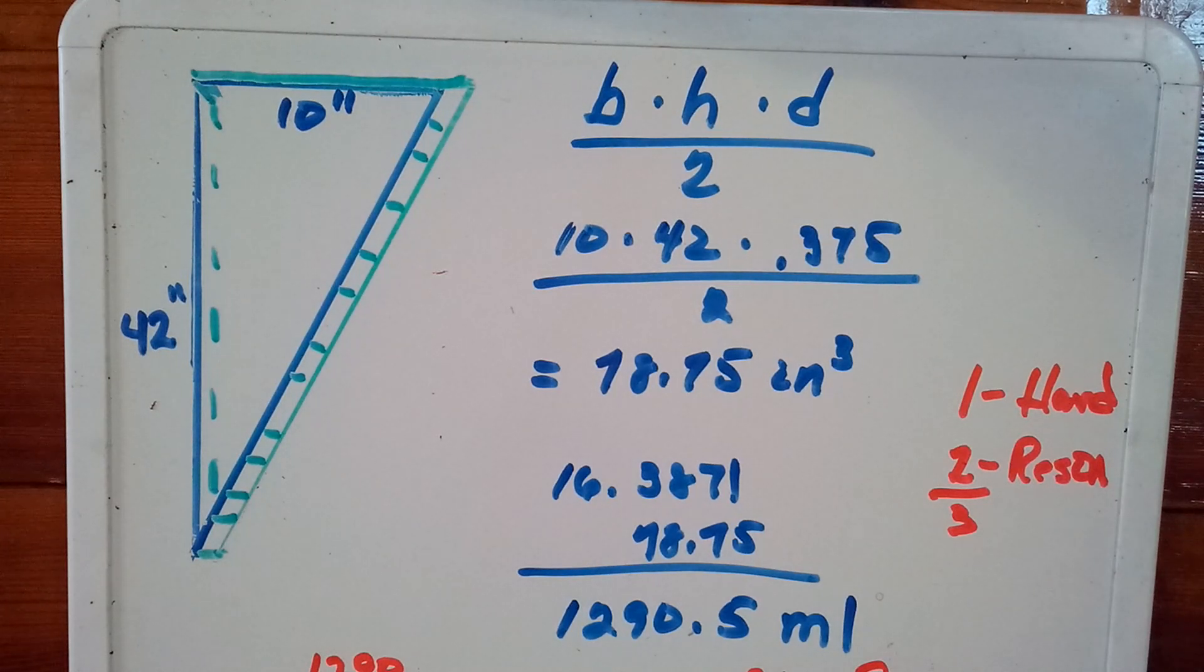And the measuring cups have a really nice scale for milliliters to use, so it makes it much easier. So now then, all I need to do is multiply my cubic inches times my milliliter per inch, and I come up with 1,290.5 milliliters required.